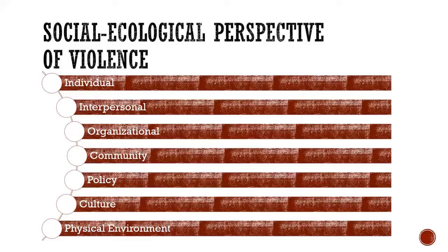Cultural determinants shape what whole populations of people share as values or beliefs. For example, the prevalence of violence in television, movies, music, and video games normalizes violence, and in fact makes it recreational, which can detract from the perception of violence as a serious issue. Finally, elements of the physical environment can influence violence by creating or limiting access to resources and services, and characteristics of how spaces are developed contribute to how safe they are or can make them conducive to crime. For example, vacant and abandoned properties in urban areas are often correlated with crime.